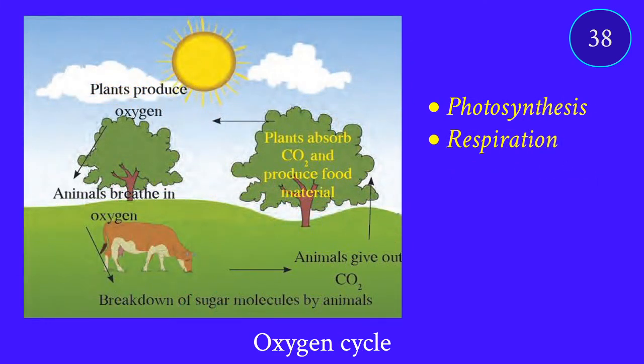Next is the oxygen cycle. Oxygen and carbon dioxide are separate cycles but related. Oxygen enters living organisms through respiration and leaves via photosynthesis. Plants absorb carbon dioxide and produce food, and during photosynthesis, oxygen is produced as a by-product, which is released into the atmosphere.